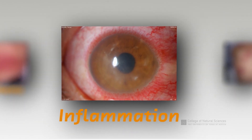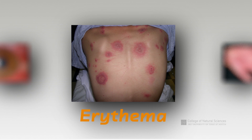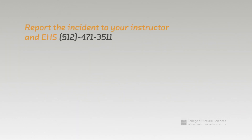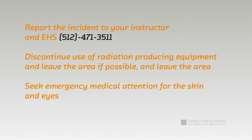Accidental exposure to UV radiation or laser radiation can be hard to identify. Signs and symptoms of an accidental exposure are inflammation of the eye or erythema of the skin, similar to a sunburn. If you think you have been exposed to UV or laser radiation, notify EMS and your lab supervisor immediately. Discontinue use of radiation-producing equipment if possible and leave the area. Seek immediate emergency medical attention for the skin and the eyes.